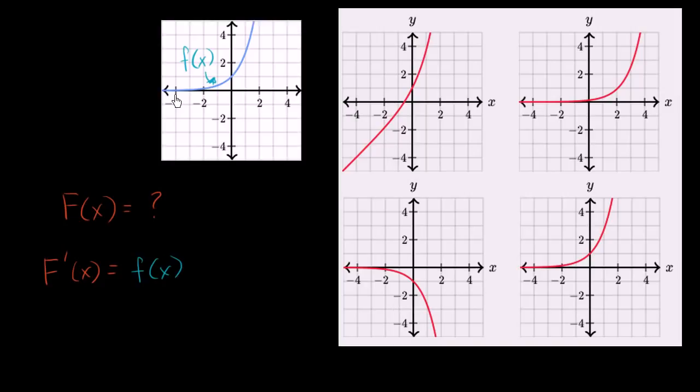Well, if this curve is going to be the derivative of one of them, that means that for any x value, it's describing what the instantaneous rate of change or what the slope of the tangent line is of whichever one of these is the possible capital F of x.